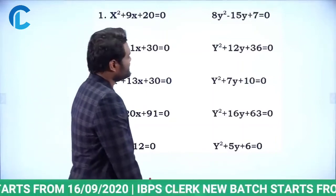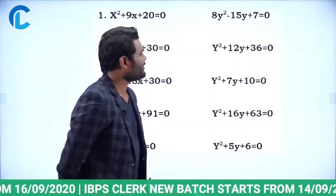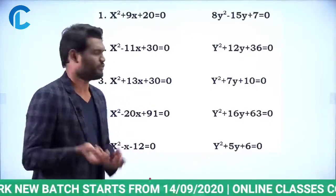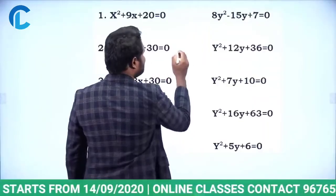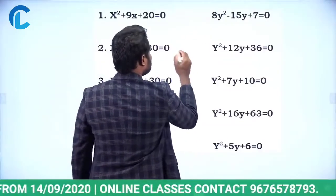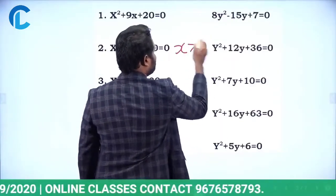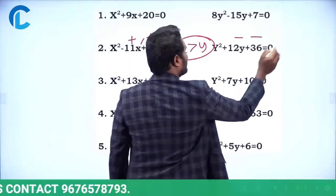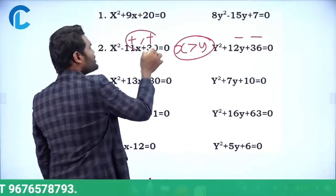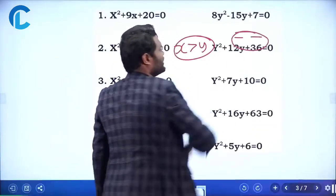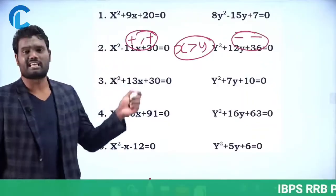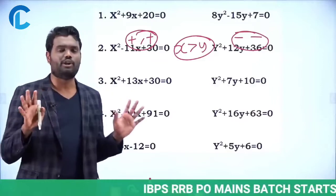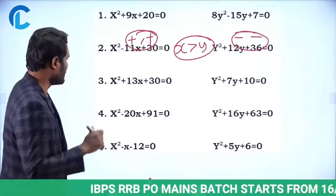Let's look at the next one: x² - 11x + 30 = 0 and y² + 12y + 36 = 0. Even this question can be solved in just a fraction of seconds. Just by looking at the question itself, I can say the answer is x greater than y. Here the roots are positive, but here the roots are negative. Obviously a positive value is greater than a negative value, so we can say x is greater than y — just two seconds of time.